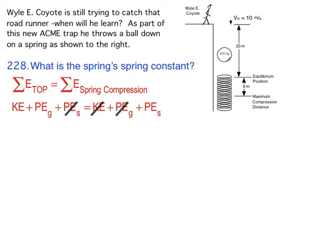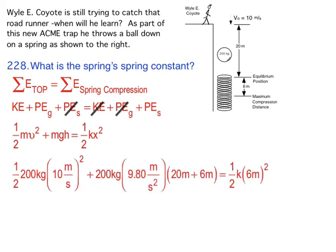So now I'll throw in my formulas. One half mv squared plus mgh equals one half kx squared. Then I'll put in the numbers, so I've got the numbers at the top equaling to the equation with the numbers at the bottom. And now I can find k, and I get k to be 3,387 newtons per meter.